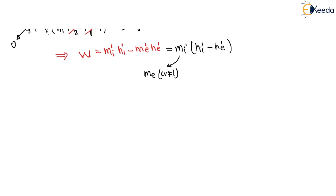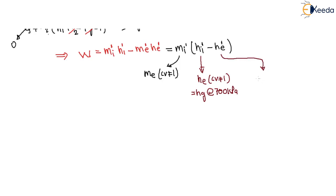Since m_i-dash equals m_e (control volume one), and h_i-dash = hg at 700 kPa (saturated vapor inlet), and h_e-dash = hg at 100 kPa (saturated vapor exit), the turbine work is calculated. The total work done comes out to 8405 kJ (approximately).